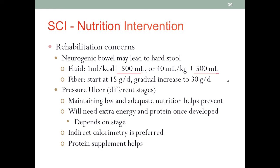Stool softeners or laxatives can also help with bowel movement. For fiber intake, we should start at 15 grams per day and gradually increase to 30 grams per day. Thirty grams is slightly higher than what healthy individuals eating 2,000 calories a day typically need. SCI patients may not need 2,000 calories per day, but they do need an adequate amount of fiber to address the neurogenic bowel.